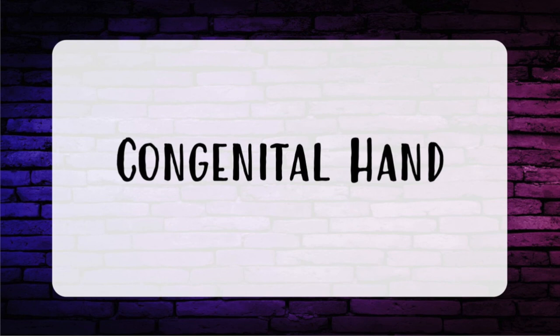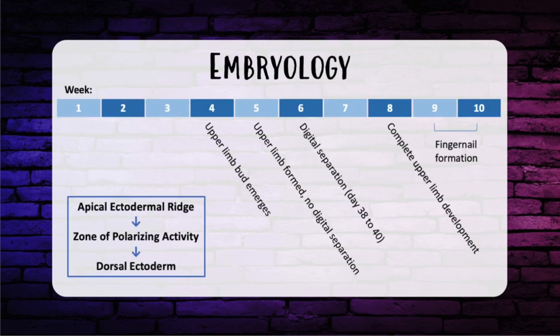We can't talk about congenital hand without starting off talking about embryology. Let's focus on the exam favorite: timing of limb development. The upper limbs develop between weeks four to eight. By week four, the upper limb bud emerges. By week five, the upper limbs have formed without digital separation. And by week six, around day 38 to 40, digital separation is occurring. When you give someone a high five, all your fingers are basically together — that's week five, no digital separation.